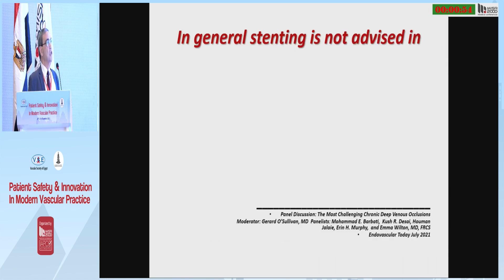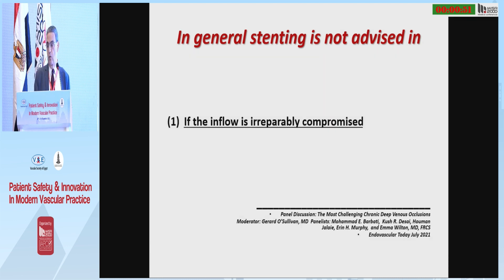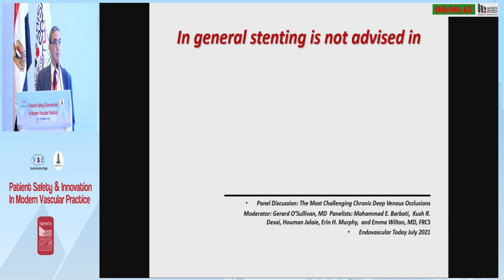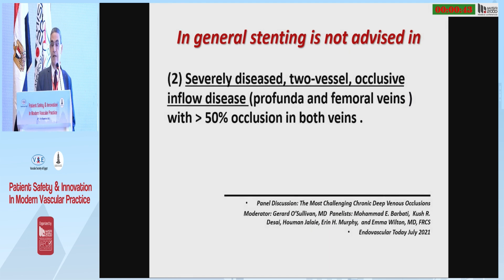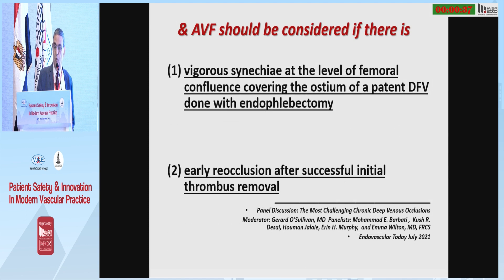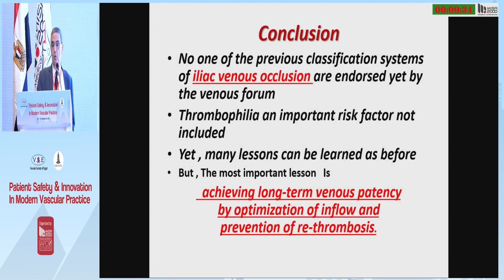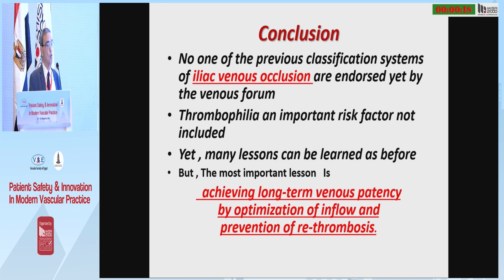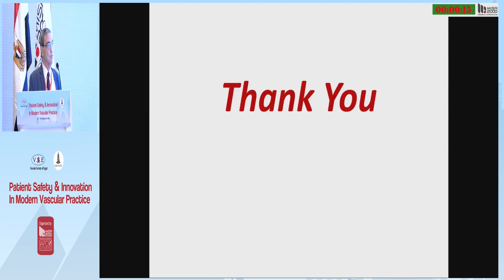In general, stenting is not advised if the inflow is irreparably compromised, as there is no flow to support stenting patency. Stenting is also not advised with severely diseased inflow artery, and AV fistula has some role. In conclusion, none of the previous classifications are endorsed yet by the venous forum, and risk factors are not included in any of them. The main lessons are: achieving long-term venous patency by optimization of inflow and the prevention of restenosis.